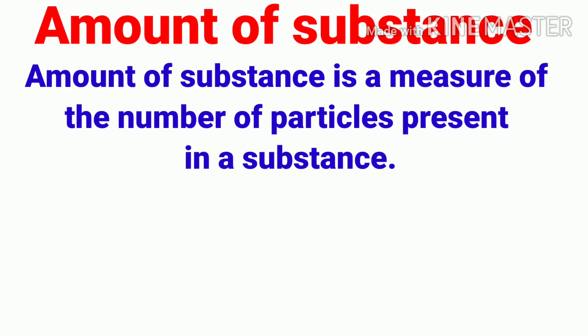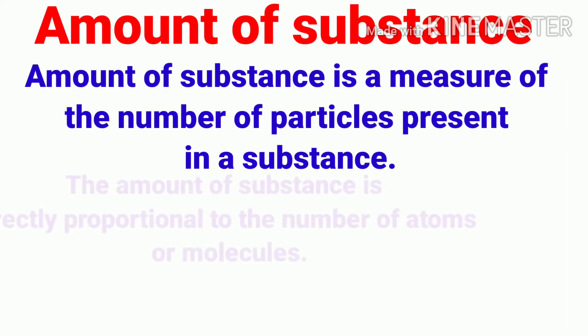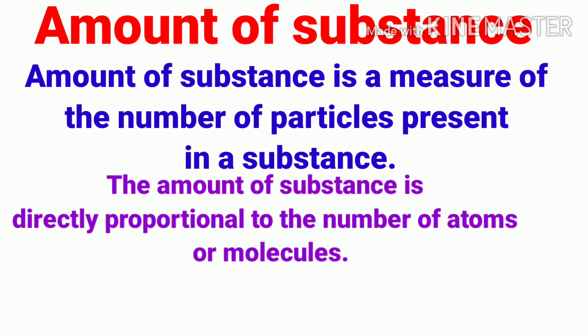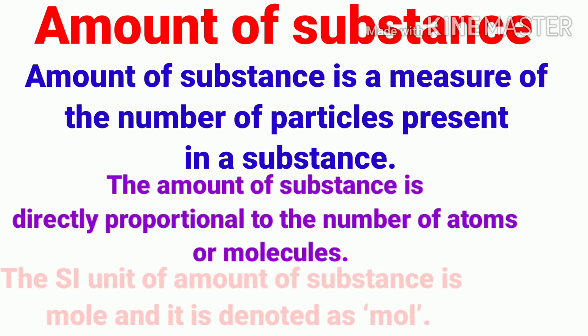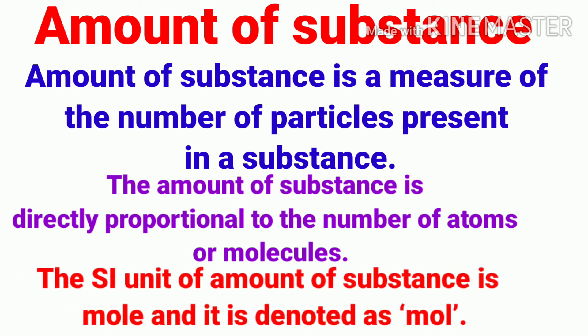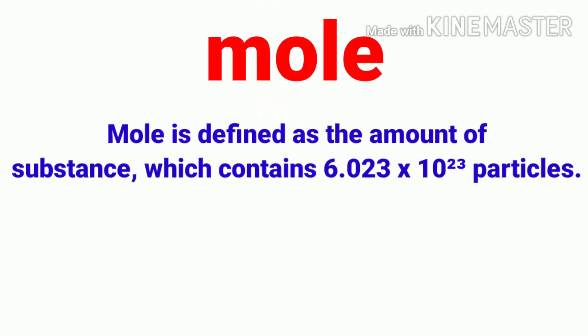Next, amount of substance. The amount of substance is a measure of the number of particles present in a substance. It is directly proportional to the number of atoms or molecules. Its unit is the mole, symbol mol. The mole is defined as the amount of substance which contains 6.023 × 10²³ particles. This number is also known as Avogadro's number.